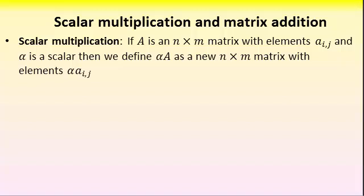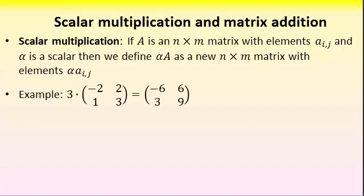For a simple example, if I want to do three times this two by two matrix, the result will also be two by two, and I just simply multiply three with each and every one of the elements of this matrix.